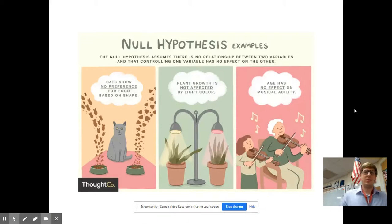Here's some null hypothesis examples. And again, a null hypothesis assumes that there's no relationship between two variables and that controlling one variable has no effect on the other variable. So a null hypothesis could be cats show no preference for food based on shape. They've changed the variable shape. They're looking at cat preference. There's no connection between them. That's the null hypothesis.